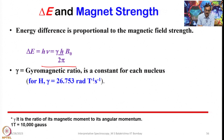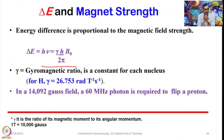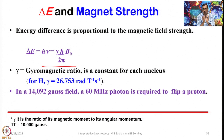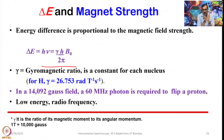One tesla equals 10,000 gauss. The gyromagnetic ratio is the ratio of the magnetic moment to the angular momentum. In a magnetic field strength of 14,092 gauss or 2 tesla, a frequency of 60 megahertz is required to flip a proton. This means an additional magnetic field applied perpendicular to the main applied field must have a frequency of 60 megahertz to cause the proton to flip. This is low energy radio frequency from the radio frequency region.